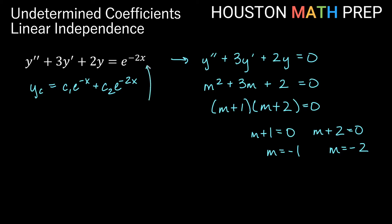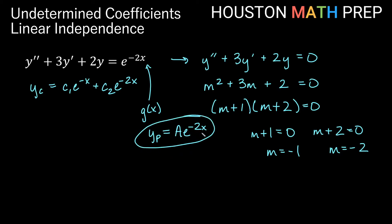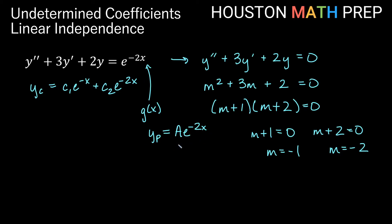Looking at the right-hand side, g of x is e to the negative 2x. Normally we would assume y sub p is some multiple of e to the negative 2x. The problem is that a e to the negative 2x is just a constant multiple of the c2 e to the negative 2x term in our complementary function — they are not linearly independent. So we multiply by x and use y sub p equals a x e to the negative 2x instead.